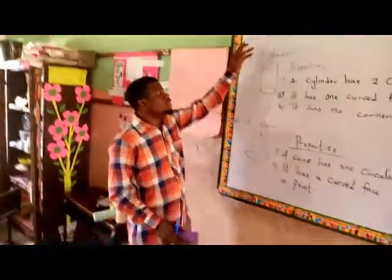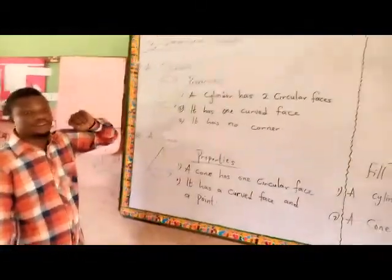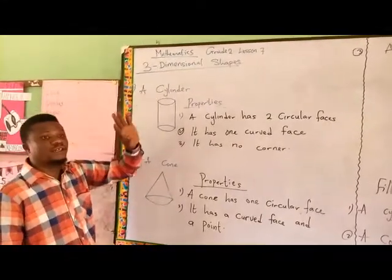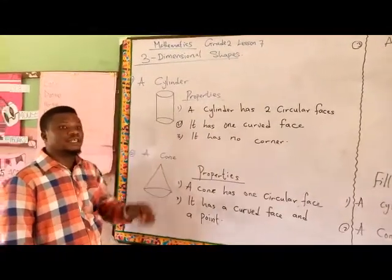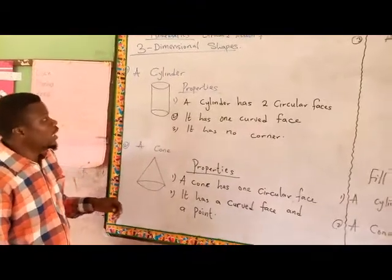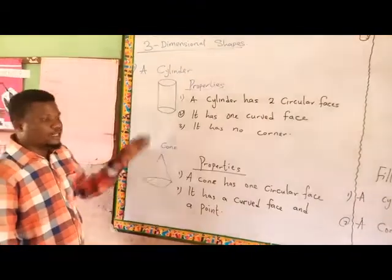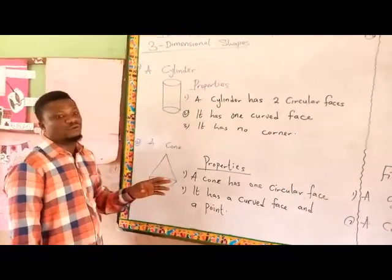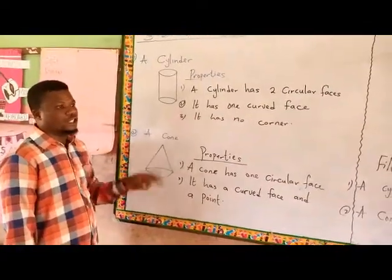This is the continuation of three-dimensional shapes. I told you earlier that three-dimensional shapes are shapes that have three dimensions which are length, breadth, and height. And I'm giving you the examples of three-dimensional shapes and even the properties of two, which is the cube and the cuboid.